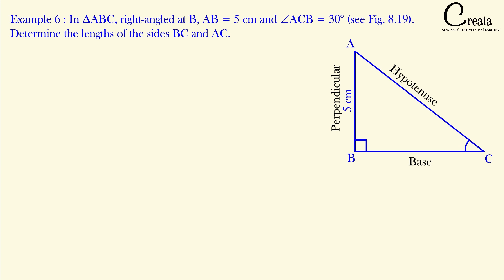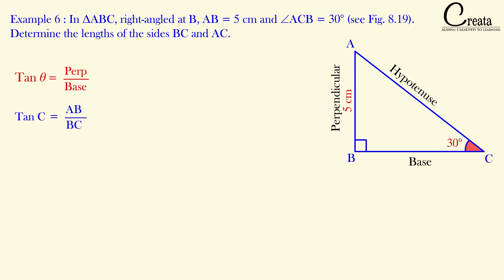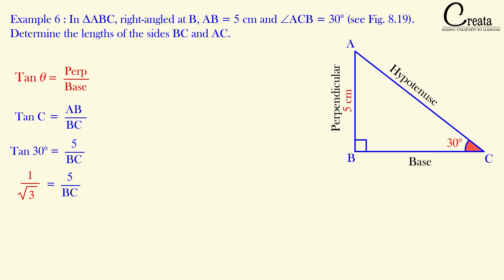The angle theta is given and perpendicular AB is given as 5 cm. We have to find the base and hypotenuse. Let's find the base first. The relation between perpendicular and base is tan theta — that is tan theta equals perpendicular upon base. Here the trigonometric angle is C, perpendicular is AB, and base is BC. So tan C equals AB upon BC. AB is 5 cm and angle C is 30 degrees. From the trigonometric ratio table, tan 30 degrees is 1 upon root 3. On solving, we get BC equal to 5 root 3 cm.